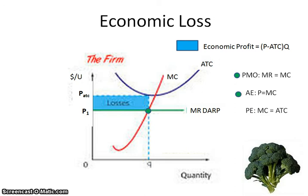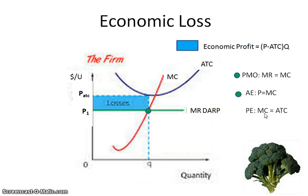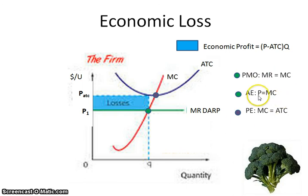Allocative efficiency happens to be at the same point. A perfectly competitive firm is always allocatively efficient. The last one is productive efficiency — producing goods as cheaply as possible — and the formula for that is where marginal cost equals average total cost, that minimum ATC. Practicing these different formulas and being able to find them on the graph will allow you to check your understanding of all of them.